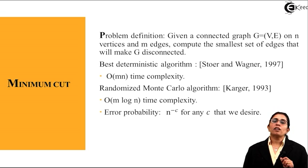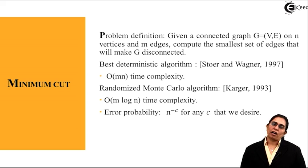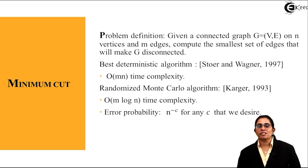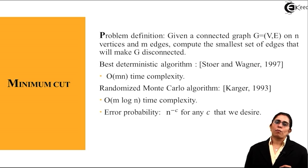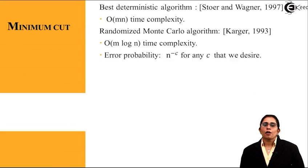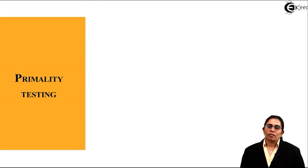But the error probability in the Monte Carlo algorithm is N raised to the power of minus C, where C is the cut that we require in a minimum cut algorithm. Now what is primality testing?